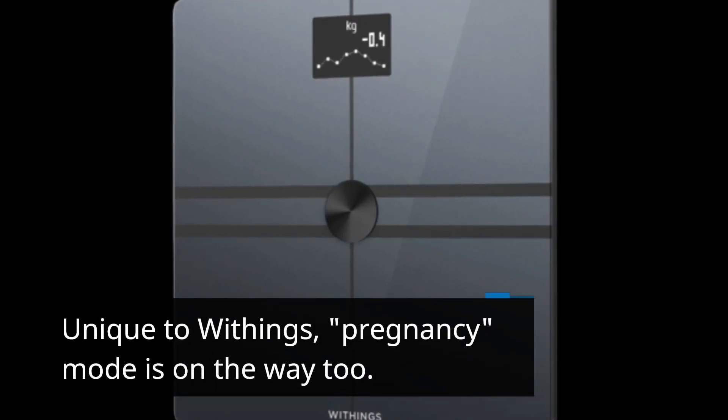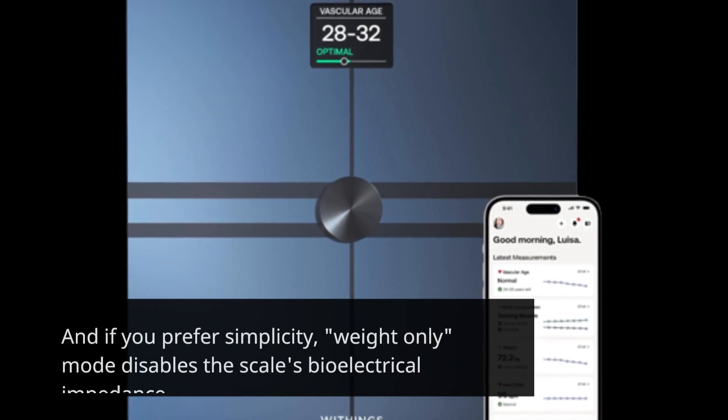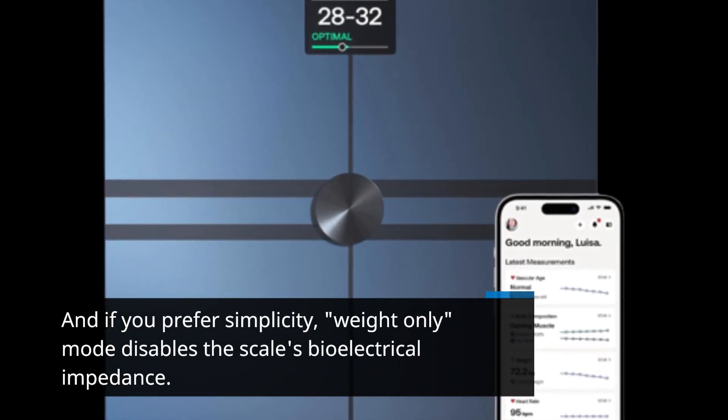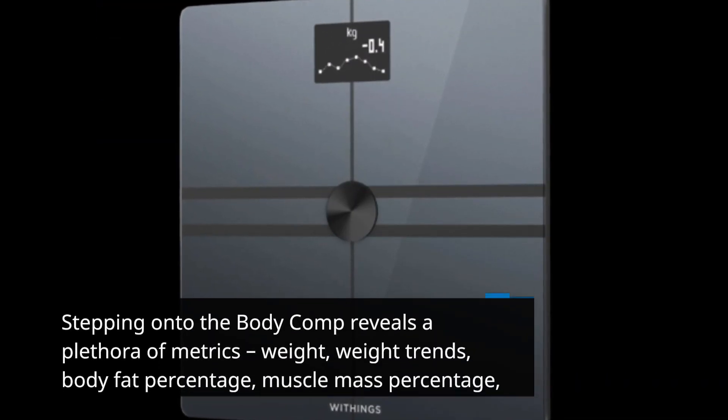Unique to Withings, pregnancy mode is on the way too. And if you prefer simplicity, Weight Only mode disables the scale's bioelectrical impedance. Stepping onto the Body Comp reveals a plethora of metrics.